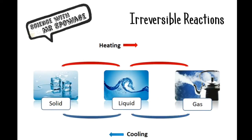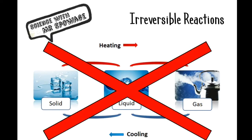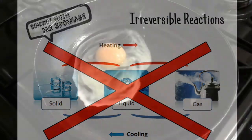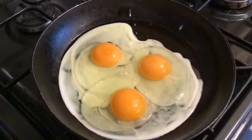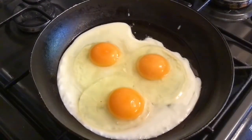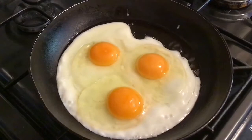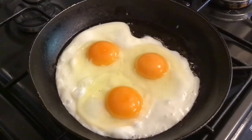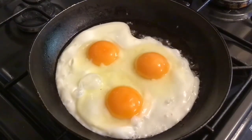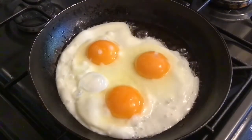Let's have a look at irreversible reactions. This is when we can't move between the different states because something else has happened. Here's an everyday example: when we cook eggs, we can't get back to their original form because now they've been cooked. We've changed them chemically and changed the bonds inside them.